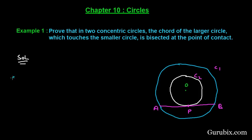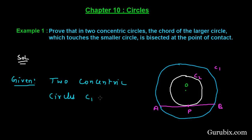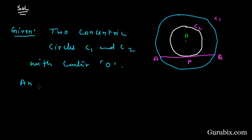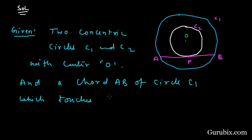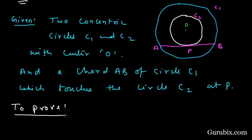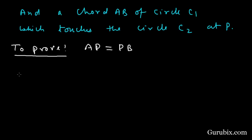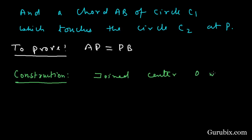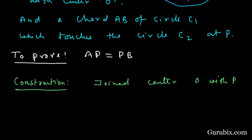We are given two concentric circles C1 and C2 with center O, and a chord AB of circle C1 which touches circle C2 at P. To prove: AP equals PB. For the construction, we shall join center O with point P.